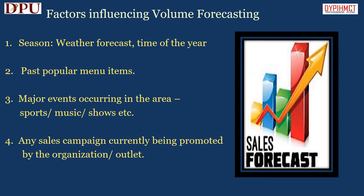The second factor is past popular menu items. These affect forecasting because, once popular menu items are known, the production pattern of that item and other items can be derived. The third factor is any major events occurring in the area — for example, sports events, music concerts, or popular shows. These types of factors may prove your forecasting wrong, as these events attract crowds towards them, which results in loss of your forecasted volume of revenue.